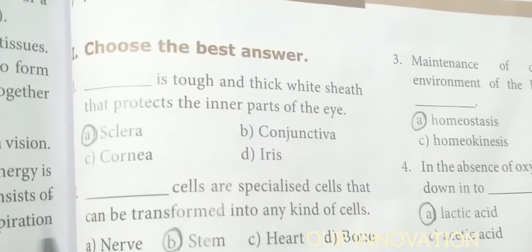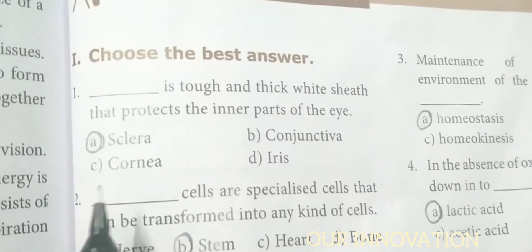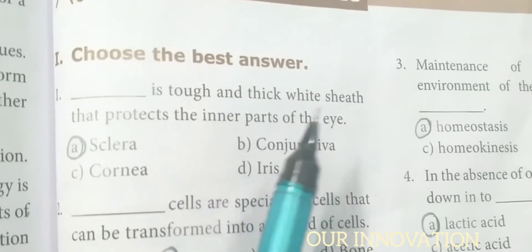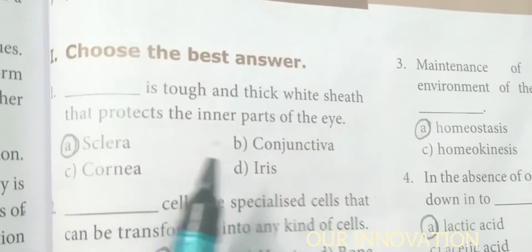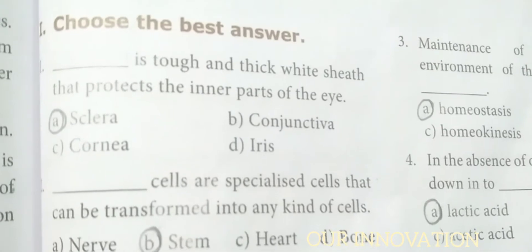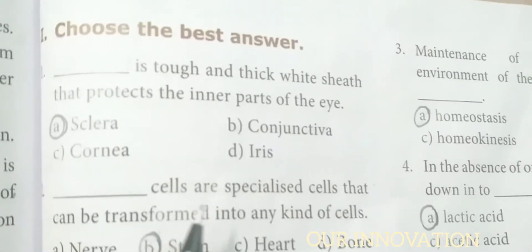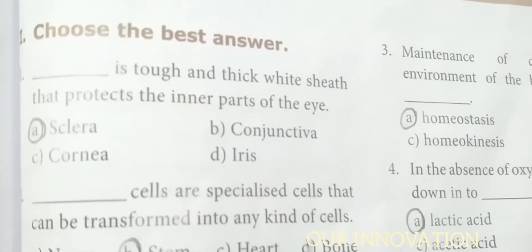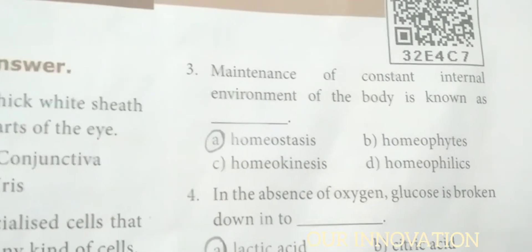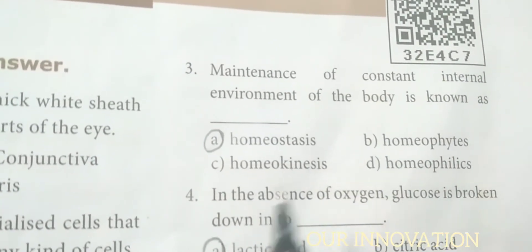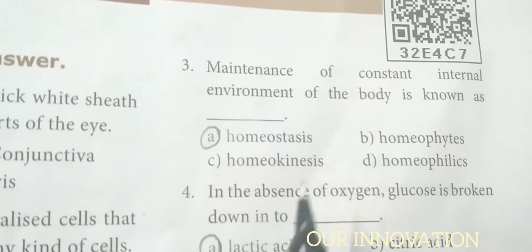Textbook exercise, Roman numeral 1: Choose the best answer. Sclera is the tough and thick white sheath that protects the inner parts of the eye. Stem cells are specialized cells that can be transformed into any kind of cells. Maintenance of constant internal environment of the body is known as homeostasis.